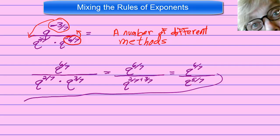Now we're dividing like bases, so we're going to subtract the exponents. q to the six-sevenths minus five-sevenths.